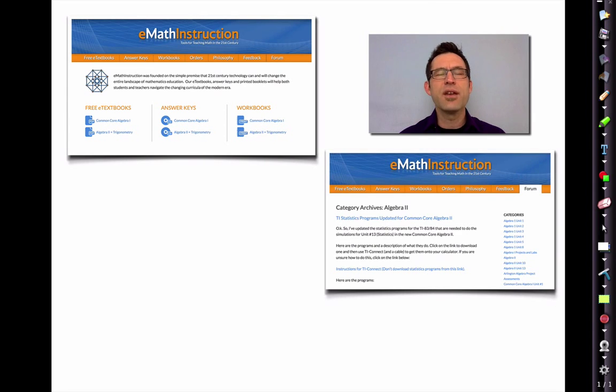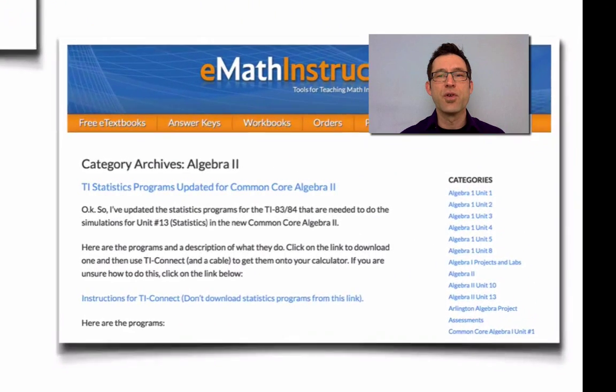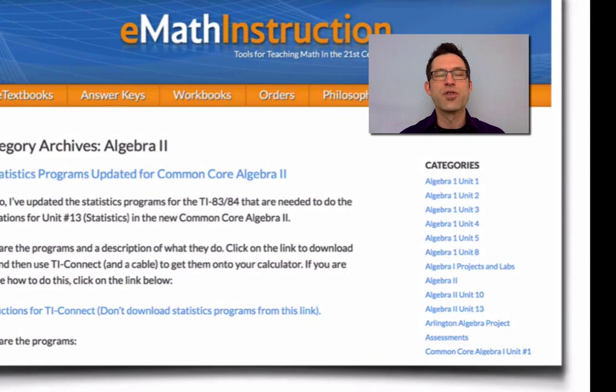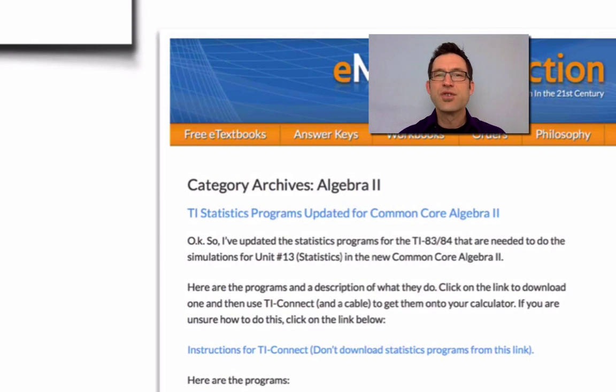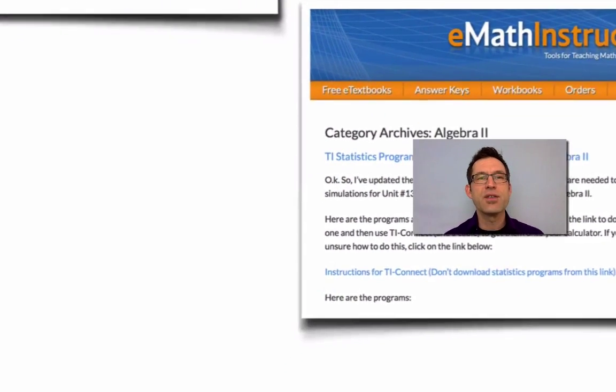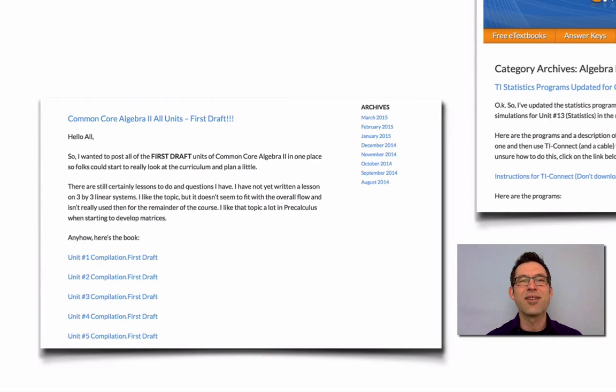Then you can scan many of the different topics that we have. Of course, if you're interested primarily in Algebra II, definitely click on the Algebra II category, and it'll take you to the Algebra II archives. Scroll down in those archives a bit, and eventually, you'll come across where we've posted the entire first draft of Common Core Algebra II. It's full of typos at this point, but as the spring wears on and as we head into the summer, we'll be getting rid of all of those just in time for August of 2015.